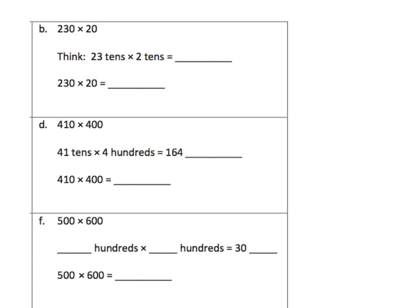We have the standard form 230 times 20, and they want us to think 23 tens and 2 tens, because 230 is the same as 23 tens, and 2 tens is the same as 20. If we look at it this way, we can decompose our numbers here.